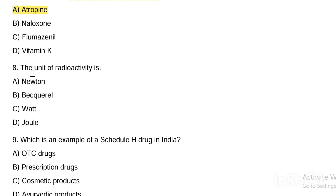Next question. Unit of radioactivity is: Option A, newton. Option B, becquerel. Option C, watt. Option D, joule. Answer is Option B — becquerel is the unit of radioactivity.